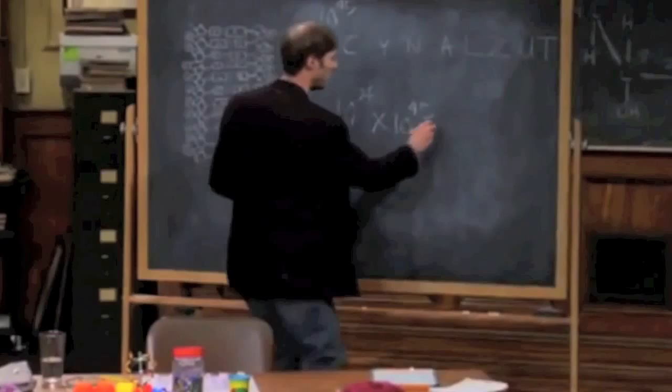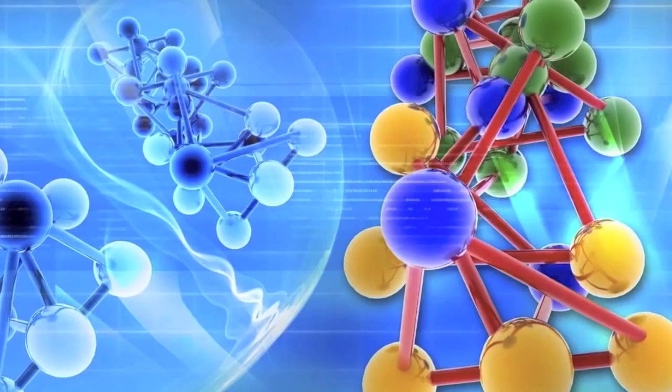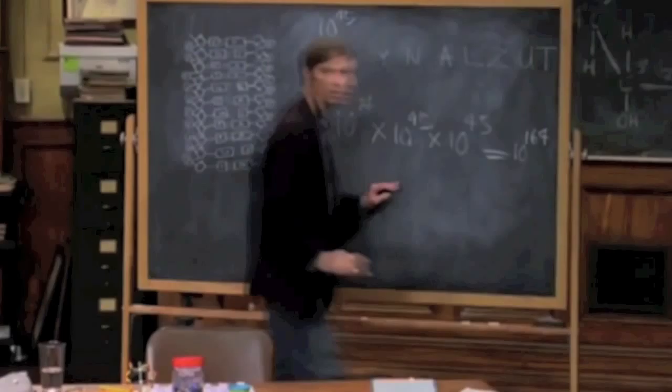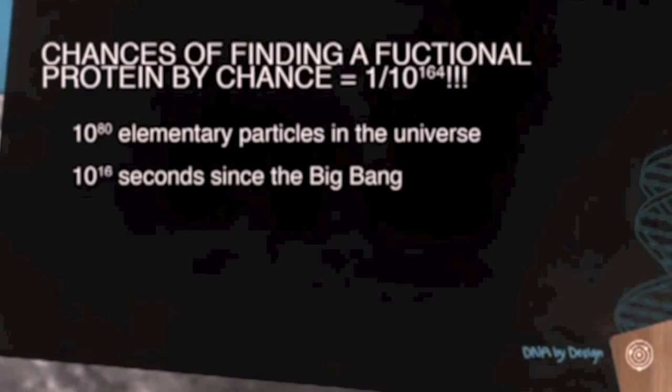Oh, my goodness. So the odds of building even a short functional protein by chance alone is 74 plus 20. Remember how you do this in math? You can add the exponents if you're multiplying exponential numbers. 10 to the 164. Wow. Now, can anyone get their mind around a number that big?